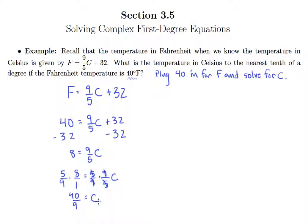Now if this was just a purely algebraic problem, we would keep the answer just like this. We would keep it as an improper fraction of 40 over 9. But it did ask us to round to the nearest tenth of a degree. So that means we'll go ahead and get an approximation for this.